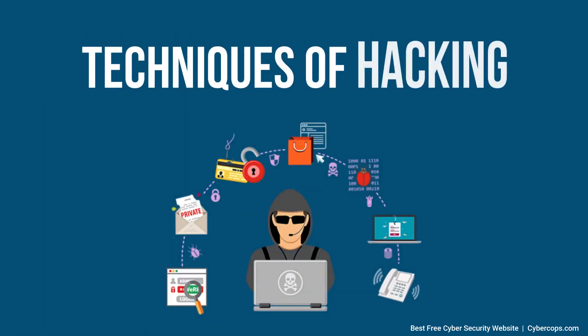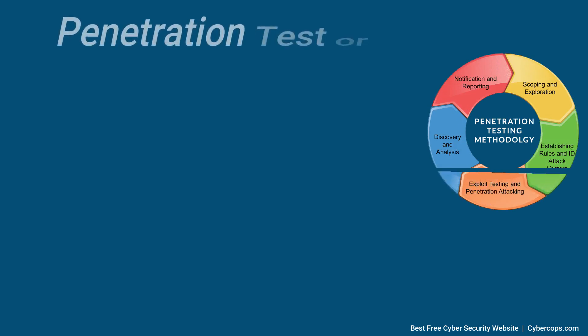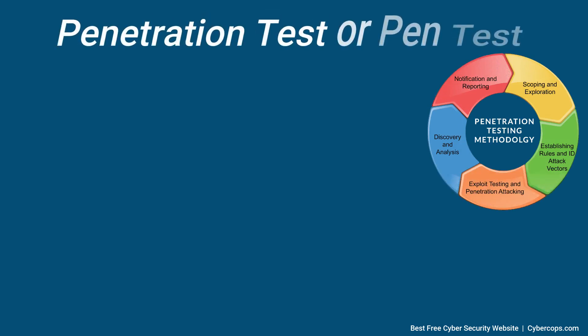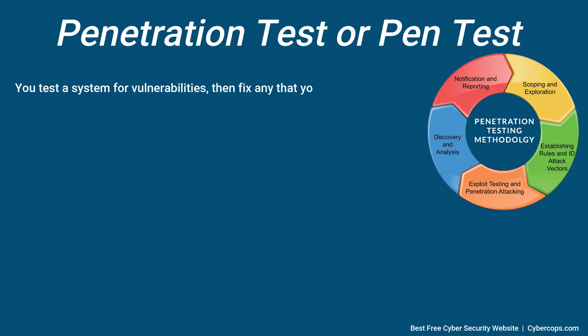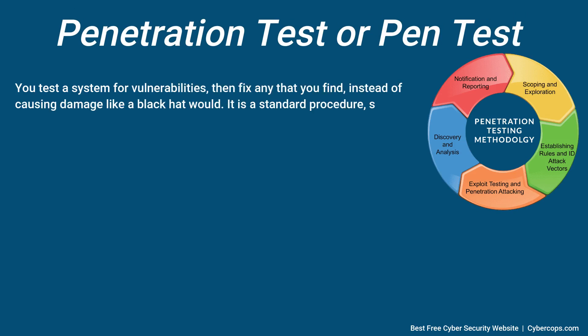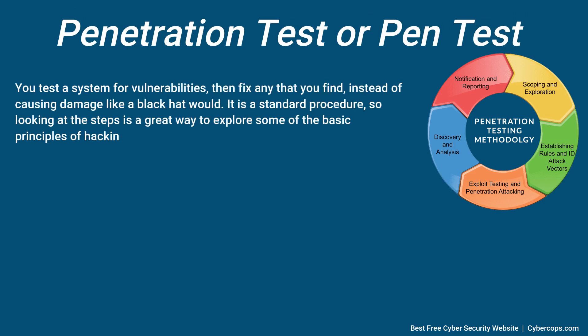Whether you're a black hat, a white hat, or a grey hat, the techniques used in hacking are largely the same. If you're a white hat testing a system for vulnerabilities, you have to know how to do all the same things a black hat hacker would do. One of the main things white hats do is called a penetration test, or pen test for short. You test a system for vulnerabilities, then fix any that you find, instead of causing damage like a black hat would.